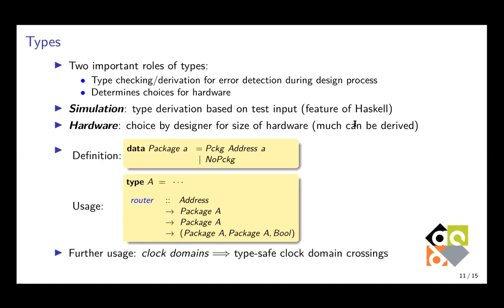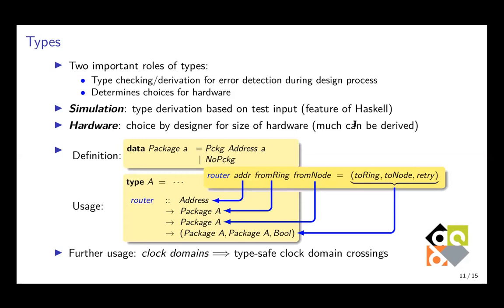So the definition of the embedded language for package was, as is shown again here, and suppose we have a type big A that is concretely defined. Then we can use that for example in the type of the router function by using the package constructor as a function to the type. So package with big A will fill in the big A in the definition of the embedded language and will set the type of the content to this big A. And this type of the router function can be read by the first thing is the type of the first argument, the second is the type of the second argument and so on. So here is a specific router function for a specific content of packages. Now you can have many different uses of types also for clock domains, which gives you typesafe clock domain crossings.